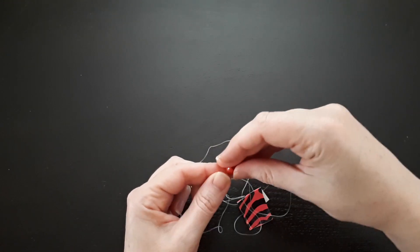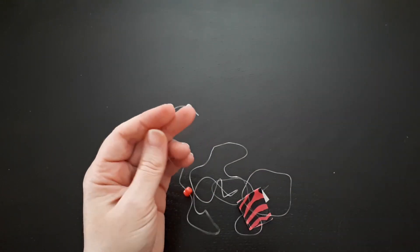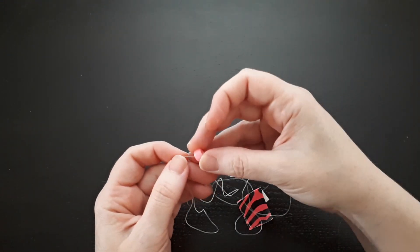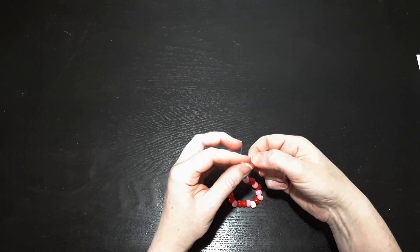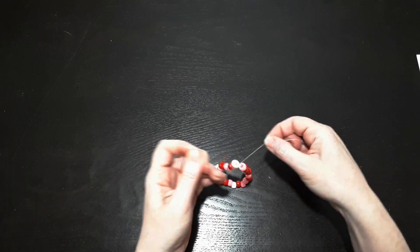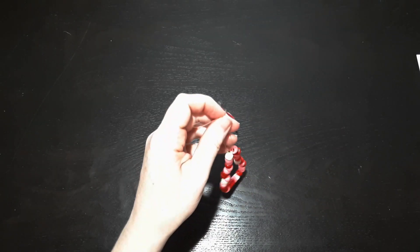Next, put each of your beads for your binary code one at a time onto the string in order that they're laid out on the sheet. Put a third color bead between each of your binary codes. I'm using white. This will mark the end of one code and the beginning of the next. When you have all your beads on the string, tie the ends together and cut off the excess string. Now you have your secret message binary code bracelet.